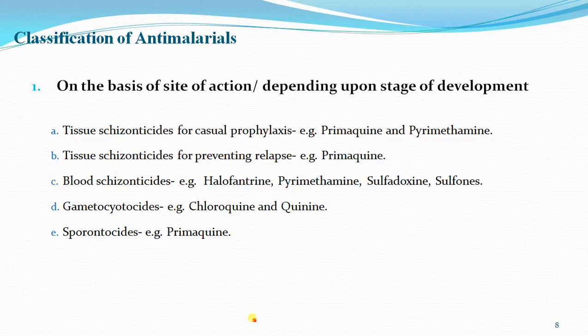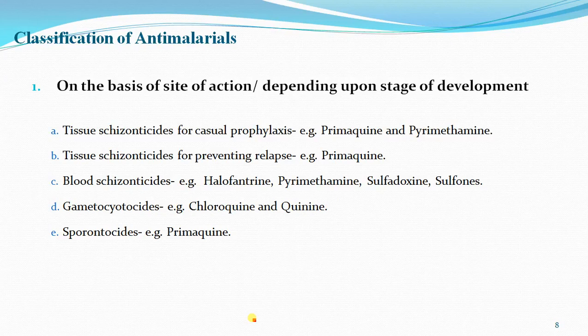The third classification is gametocides, which destroy the gametocytes — example is quinine, the cinchona alkaloid. To repeat: anti-malarial drugs depending on stage of development include sporozytocides (no ideal agent available), tissue schizontocides divided into exo-erythrocytic stage (primaquine), erythrocytic stage (chloroquine), and gametocides (quinine — cinchona alkaloid; chloroquine is also used for this).